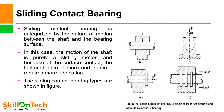Sliding contact bearings are categorized by the nature of motion between the shaft and the bearing surface. Types include journal bearings, pivot bearings, single collar thrust bearings, and multi-collar thrust bearings. In sliding contact bearings, the motion of the shaft is purely a sliding motion, and because of surface contact, the frictional force is greater — hence requiring more lubrication.